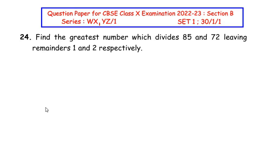Hello and welcome to my channel. In this video we are going to solve the 24th and 25th questions from the CBSE class 10 examination, section B, where each question is of two marks. The 24th question is from the real numbers chapter: find the greatest number which divides 85 and 72 leaving remainders 1 and 2 respectively.